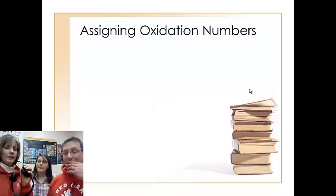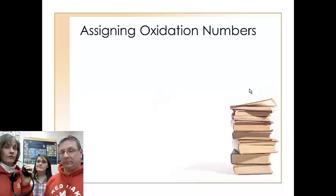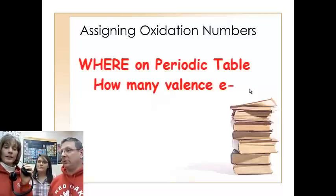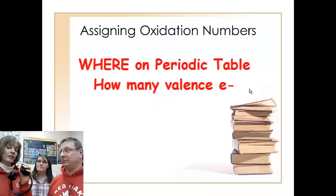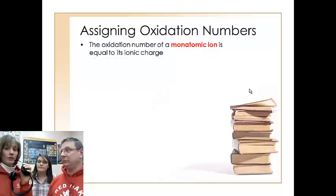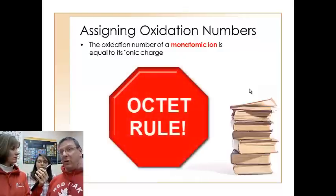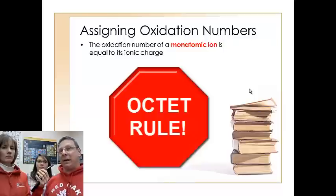So when we're assigning oxidation numbers there are some rules to follow for that. And a lot of it goes back to where the element is on the periodic table and how many valence electrons it has so that we can figure out what's being lost or gained in order to satisfy that octet rule. All of these things keep piling back on each other.